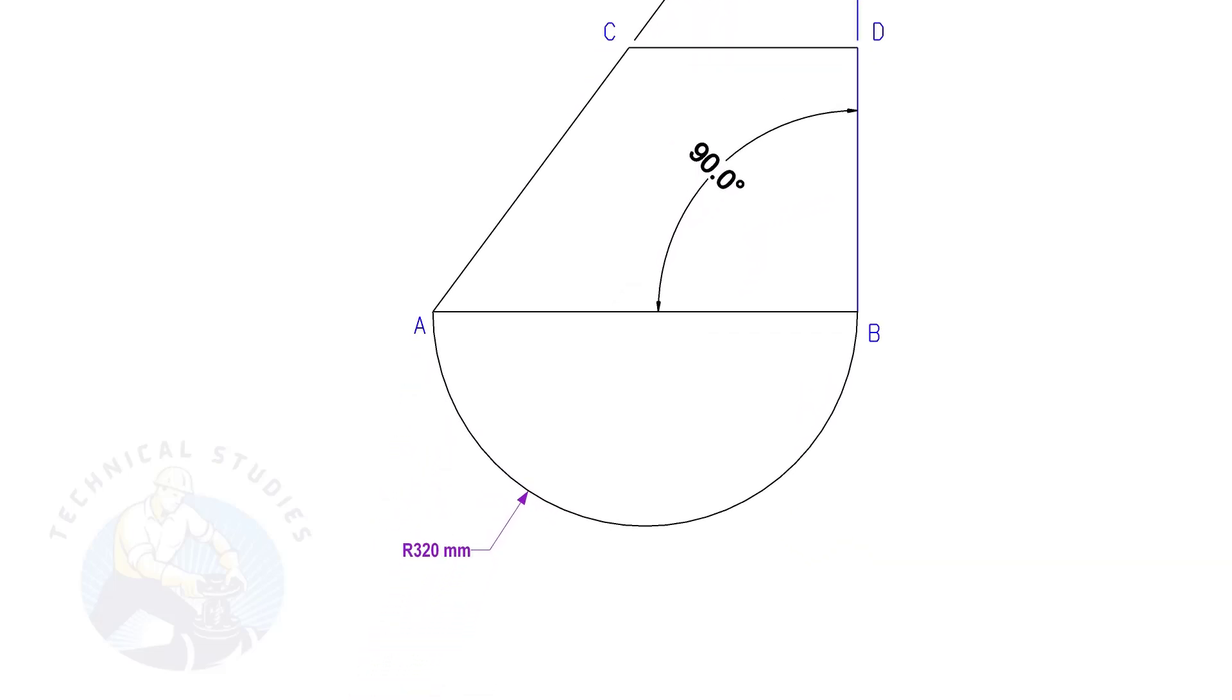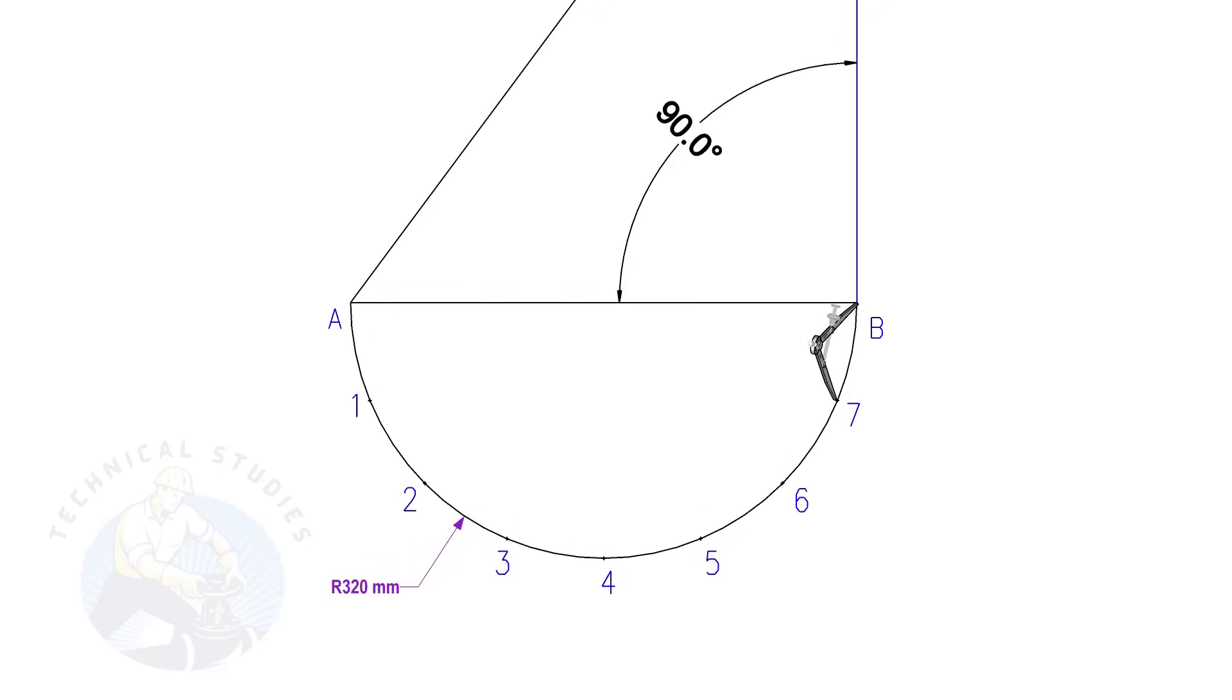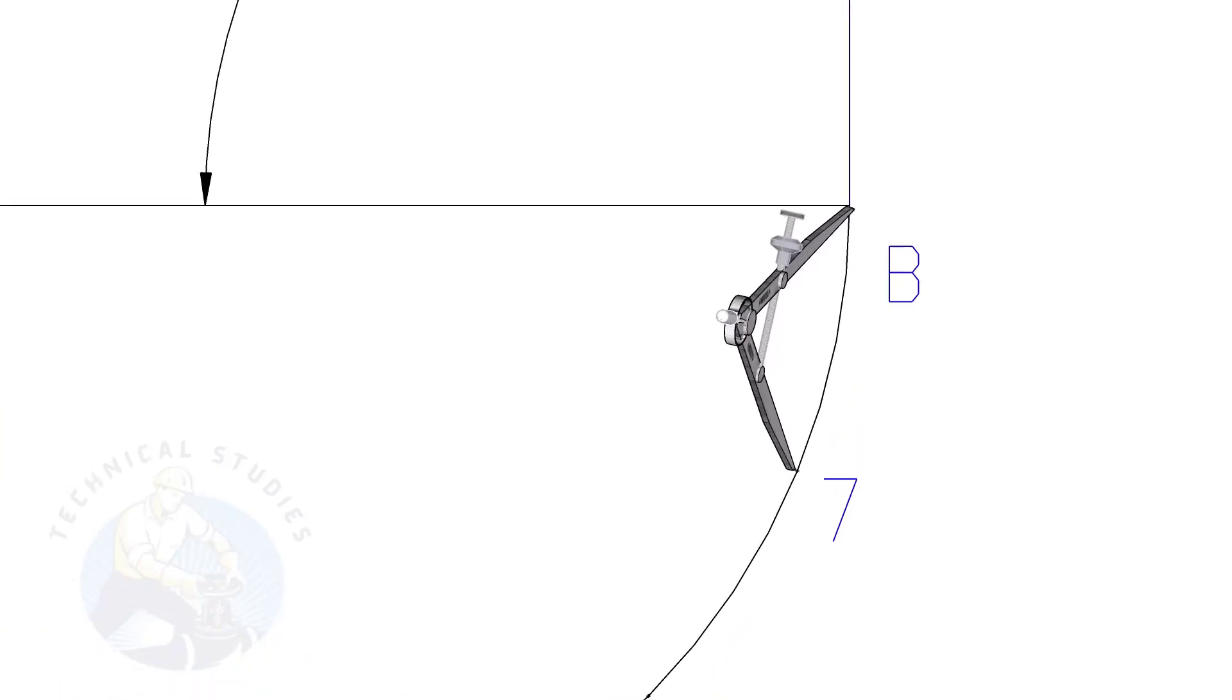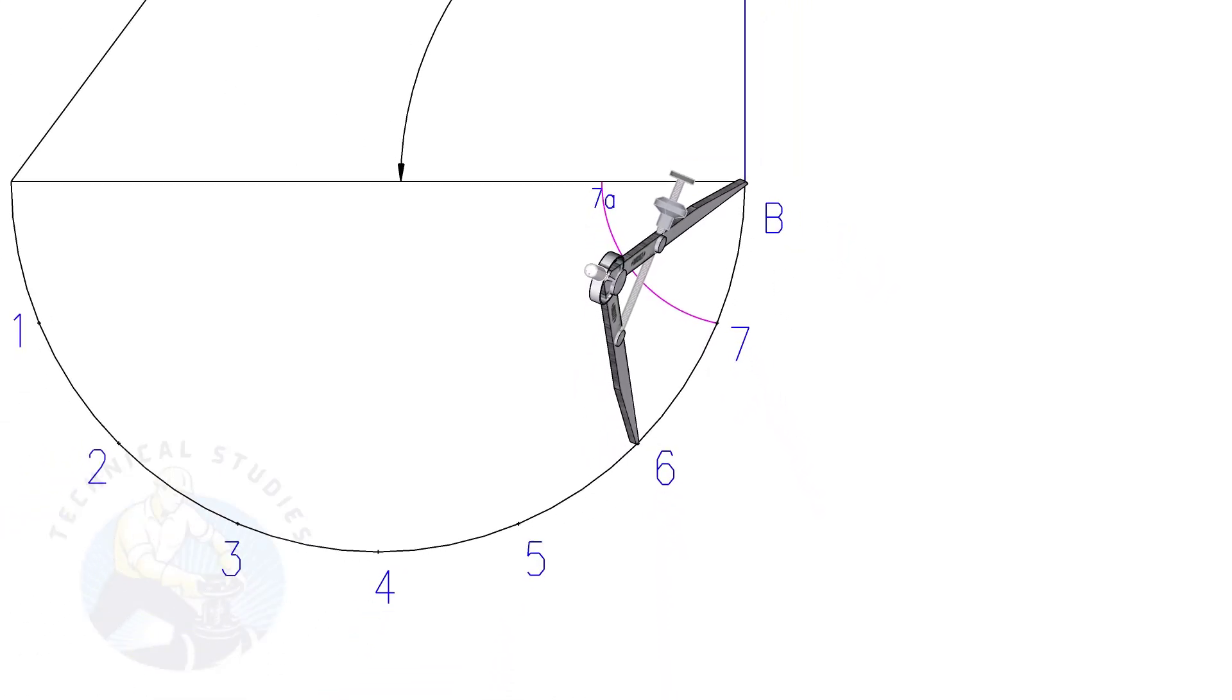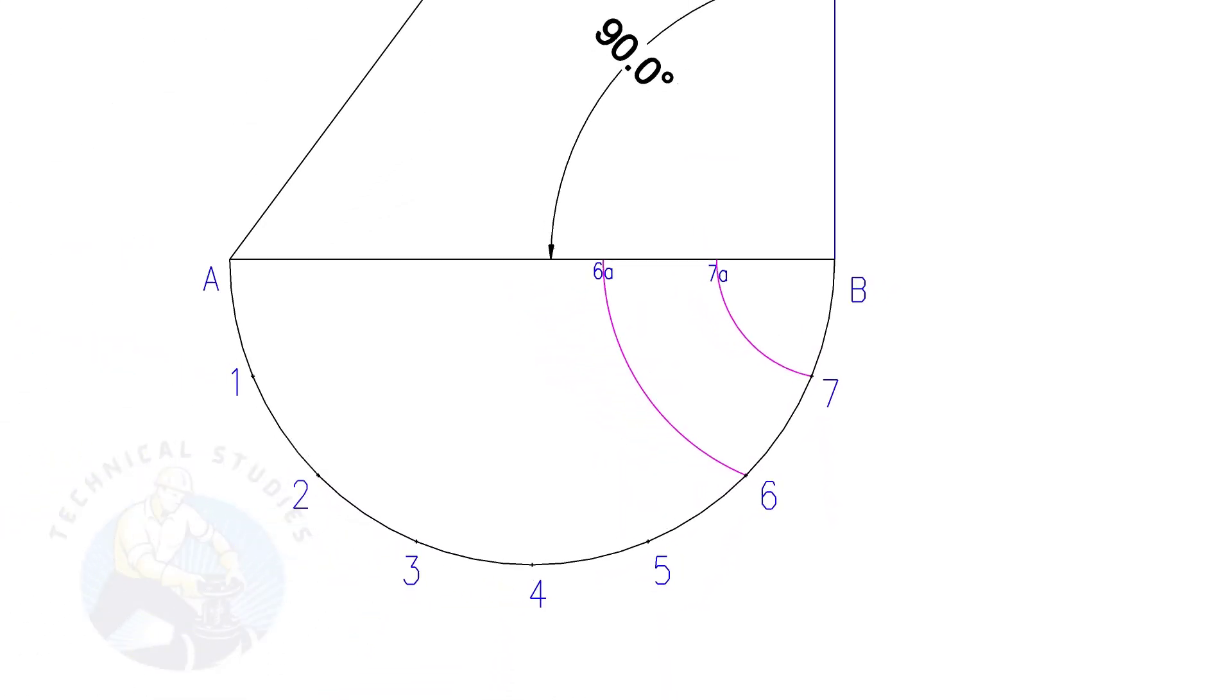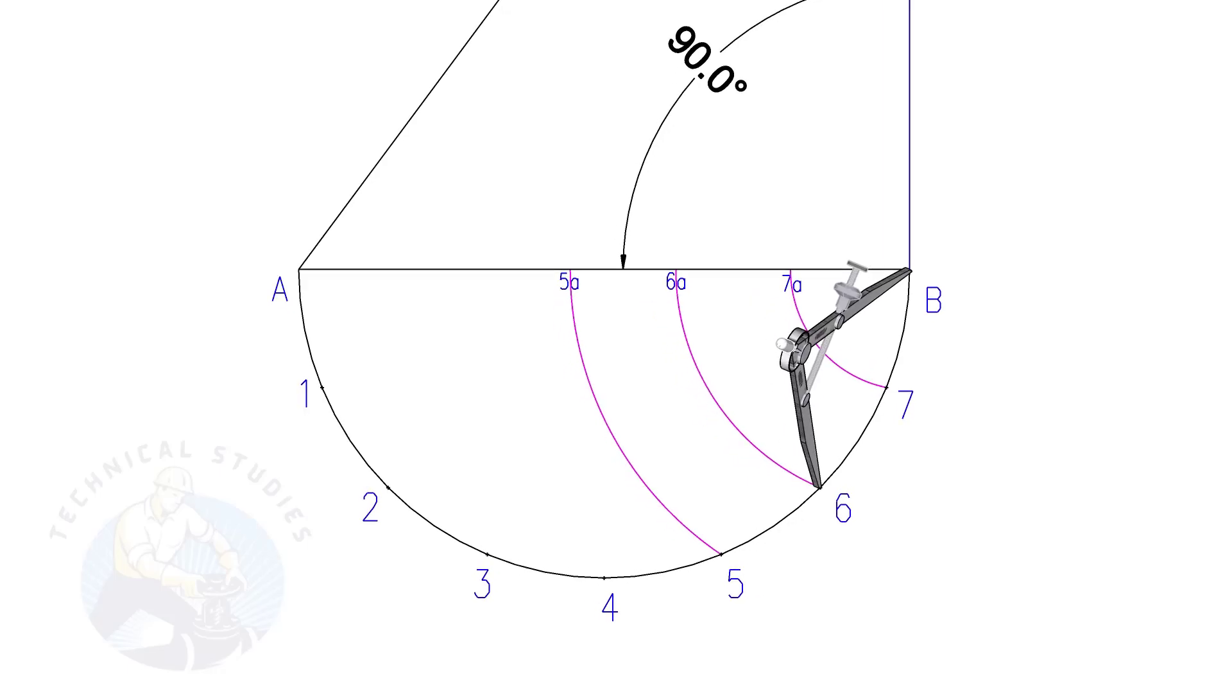Draw a half circle of diameter of the bottom side and divide it into 8 equal parts. Draw arcs as shown. Remember, we are going to lay out half part of the cone only, which means we are actually dividing the bottom into 16 parts.